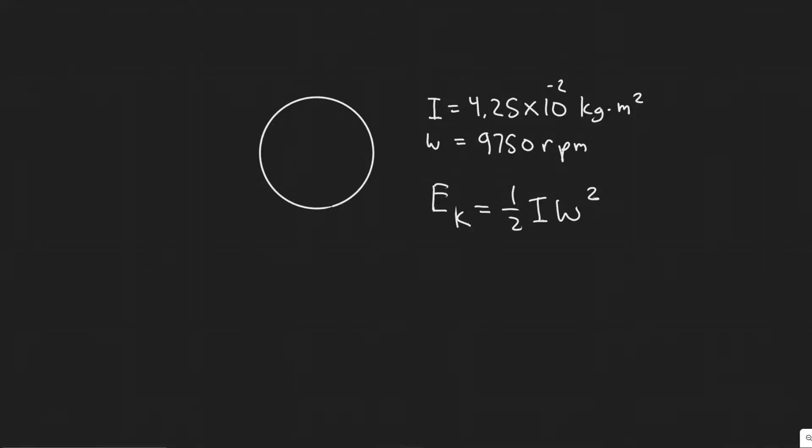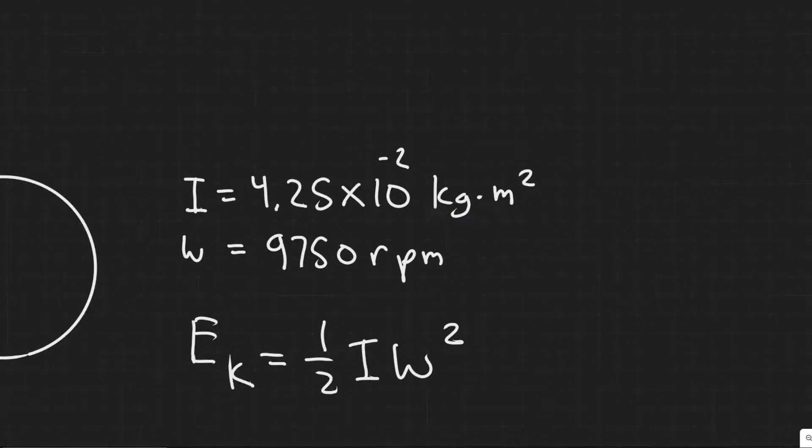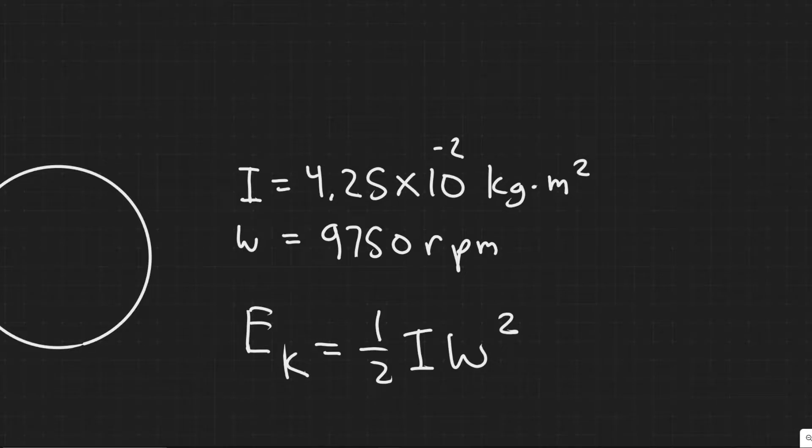In this problem, we're told a centrifuge rotor has a moment of inertia of 4.25 × 10⁻² kg·m². How much energy is required to bring it from rest to 9,750 revolutions per minute? We can imagine we have this rotor here, and we know its inertia is this value. We're trying to get the angular velocity omega to equal 9,750 rpm.